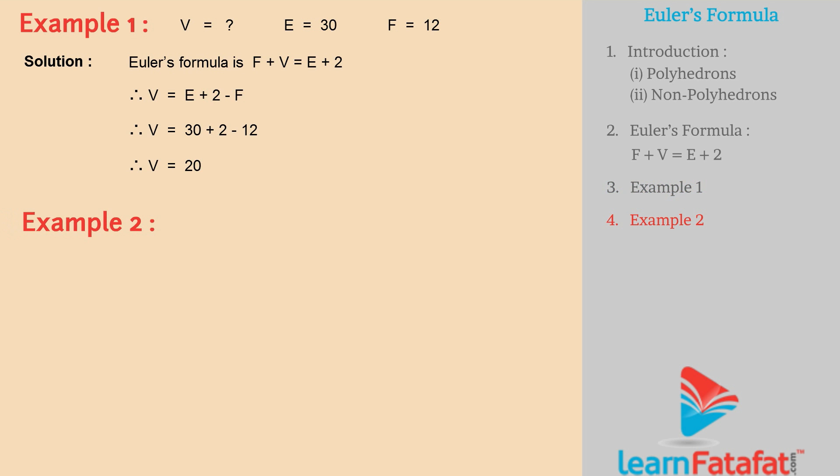Example 2: If for a solid V is equal to 10, E is equal to 18, then find F. Solution: Euler's formula is F plus V is equal to E plus 2.